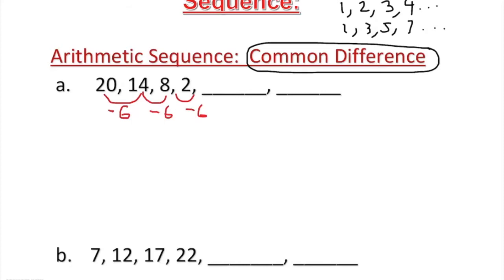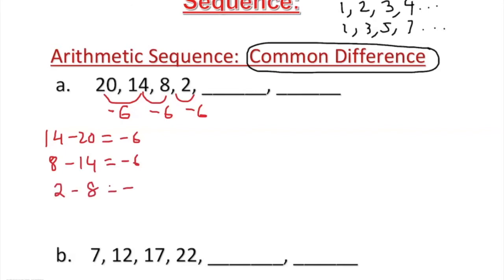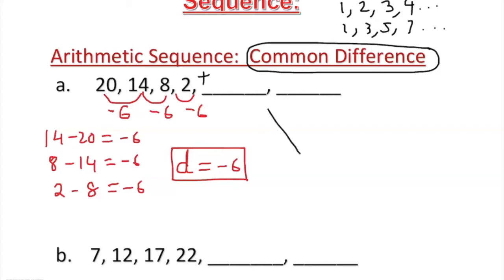How do you figure out the common difference? It's 14 minus 20, which is negative 6 — that's called the difference. And 8 minus 14 is also negative 6, and 2 minus 8 is also negative 6. So clearly our common difference is negative 6. Once we have our common difference, we can just add it to the last number. In this case, 2 plus negative 6 gives you negative 4.